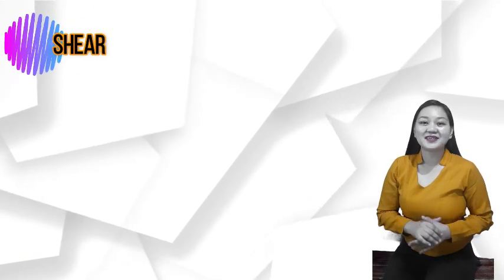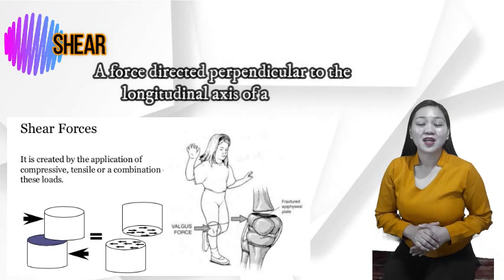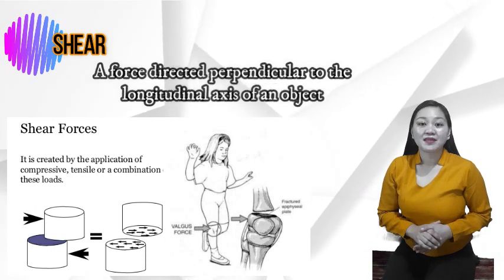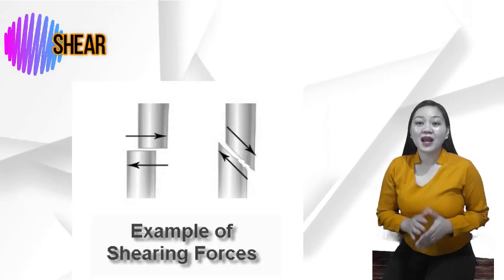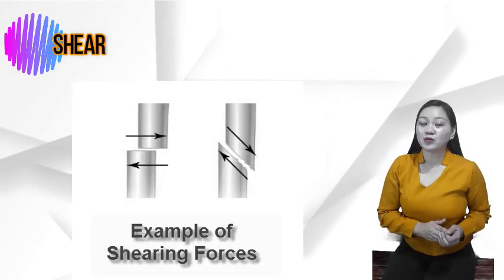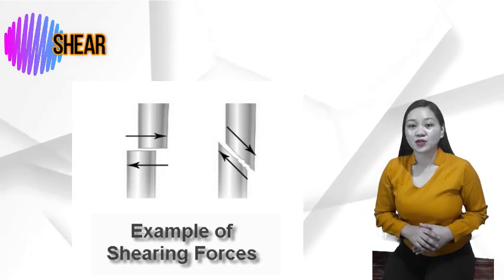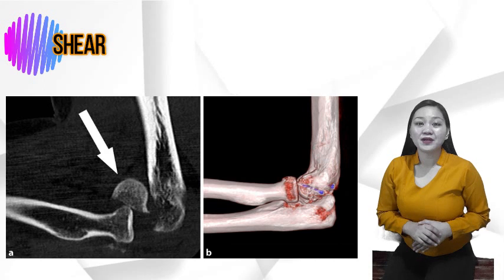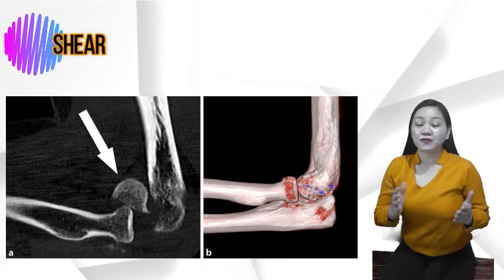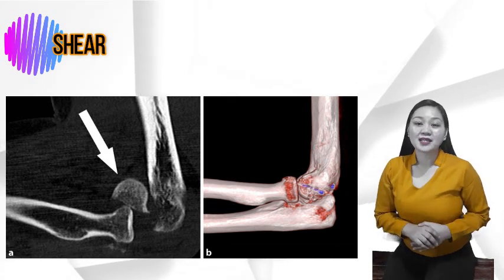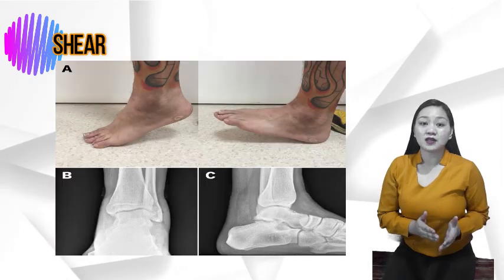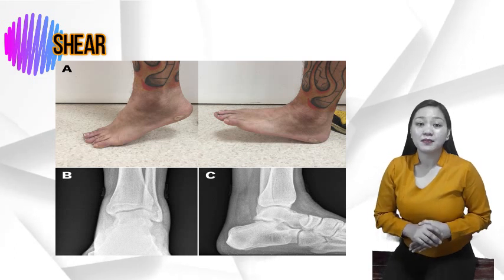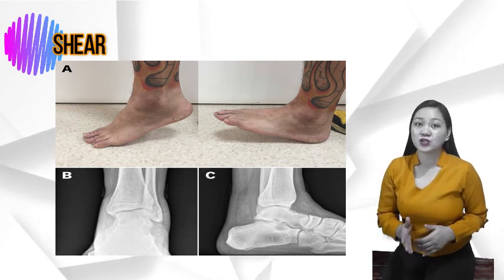Shear. A force directed perpendicular to the longitudinal axis of an object is a shear force. The result of a shear force allows one portion of the object to displace in relation to other portions of the object. Shear forces often result in bone fractures. If, for example, a force is delivered to the shin when your foot is fixed to the ground, one portion of the shin may be displaced in relation to the other.